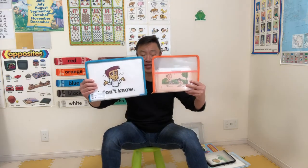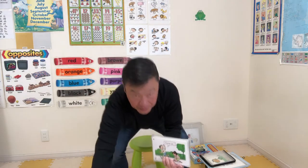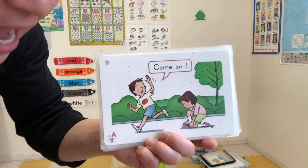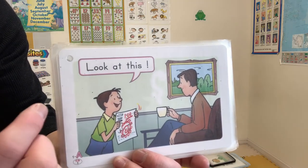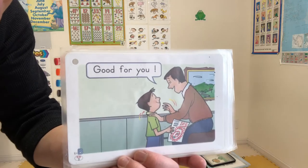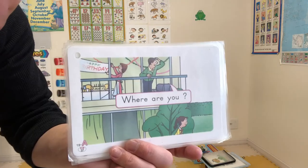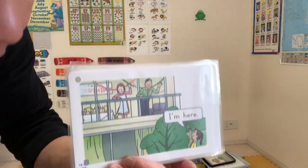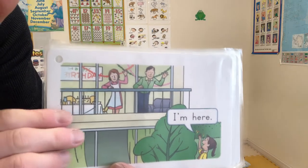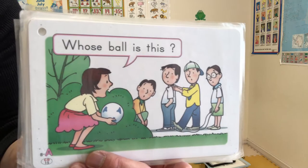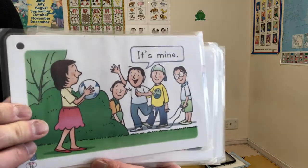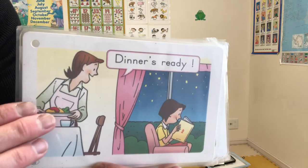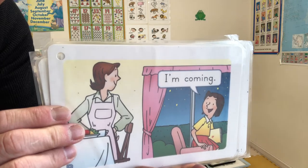These are the expression cards in my lesson plan. I'll come up closer. I have: Come on! — that is hayaku. Just a minute! — that is chotto mate. Look at this! — that is kore wo mite. Good for you! — yoogatta desu ne. Where are you? — anata wa doko desu ka? I'm here! — watashi wa koko ni imasu. Whose ball is this? — kore wa dare no ball desu ka? Dinner's ready! — banquan deketa yo! I'm coming! — ima iku!